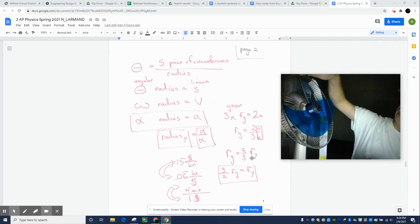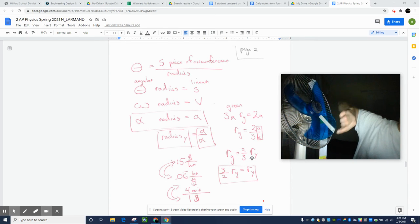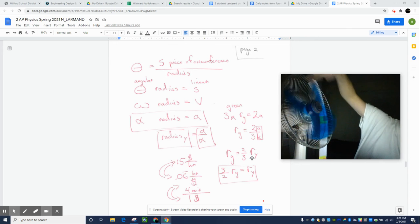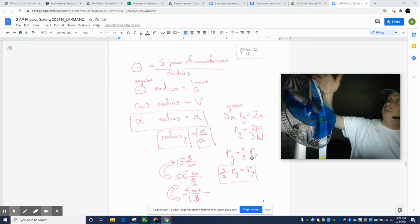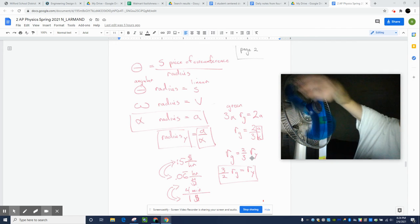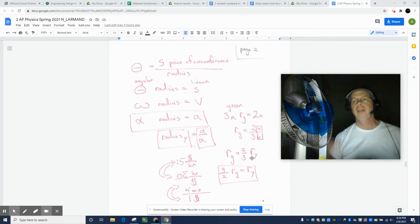So imagine this thing sweeping out the circumference. And then all we're going to do is divide that distance by the radius. And it's just a different way to say how much something rotates. Mathematical definitions are pretty boring.